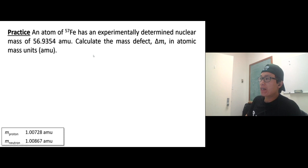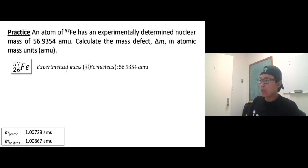One more: an atom of iron-57 has an experimentally determined nuclear mass of 56.9354 amu. Calculate the mass defect, ΔM, in atomic mass units. All right, so they said experimentally we got that number, but how much is it lower than the calculated one? So iron-57, the calculated mass is going to come from the number of protons and neutrons. Iron-57 has 26 protons, which is that mass in amu.